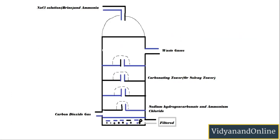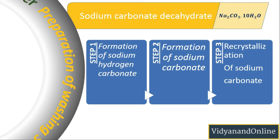Let us understand how washing soda is prepared — in a similar way to how baking soda is prepared. From the top, you feed sodium chloride solution along with ammonia — that is why it is called ammonical brine. From the bottom, carbon dioxide gas is fed. They mix to form sodium hydrogen carbonate (NaHCO3) and ammonium chloride. The NaHCO3, being a solid precipitate, is filtered out. This is the first step — formation of sodium hydrogen carbonate.